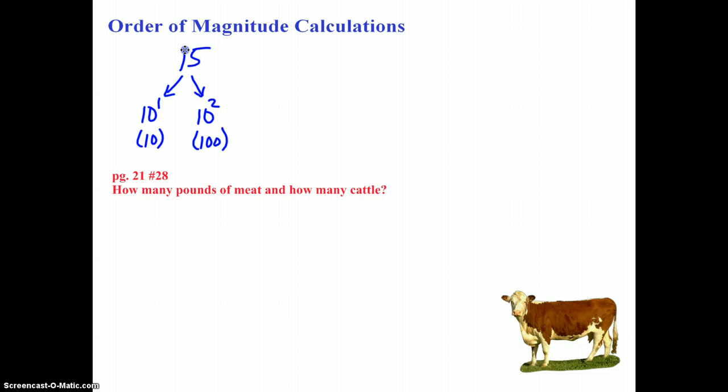15 lies between 10 and 100, which by powers of 10 is 10 to the 1 and 10 to the 2. Well clearly, which one is 15 closer to? 15 is 10 to the 1, so 15's order of magnitude is 10 to the 1, or you can just say its order of magnitude is 1 just stating its exponent.